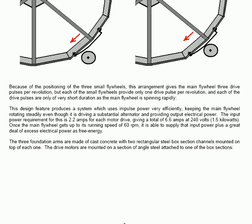Keeping the main flywheel rotating steadily even though it is driving a substantial alternator and providing output electrical power. The input power requirement for this is 2.2 amps of current for each motor drive, giving a total of 6.6 amps at 240 volts and that is 1.5 kilowatts of input power. Once the main flywheel gets up to its running speed of 60 RPM, it is able to supply that input power plus a great deal of excess electrical power as free energy.